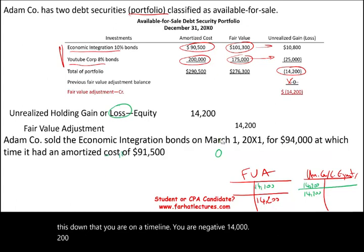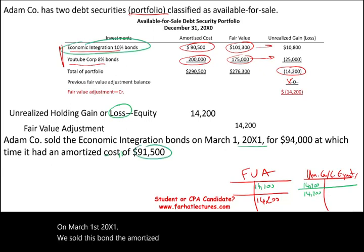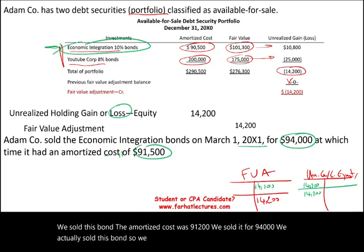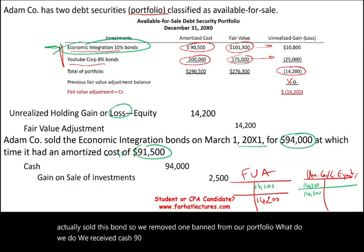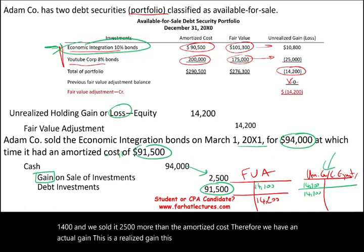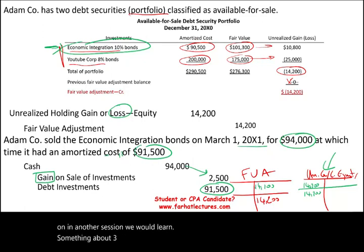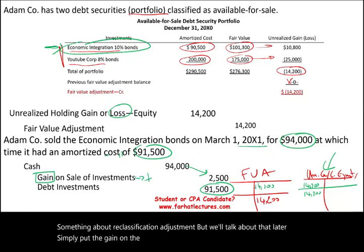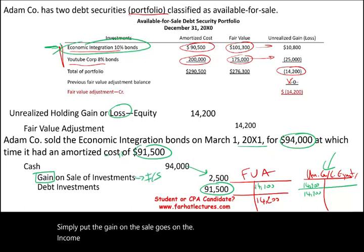On March 1st, 20X1, we sold the Economic Integration bond. The amortized cost was $91,400 and we sold it for $94,000, so we received cash $94,000, removed the bond at amortized cost $91,400, and recorded a realized gain of $2,500. This is different from an unrealized gain. The gain on the sale goes on the income statement, whereas unrealized gains for available for sale securities go in the equity section of the balance sheet.